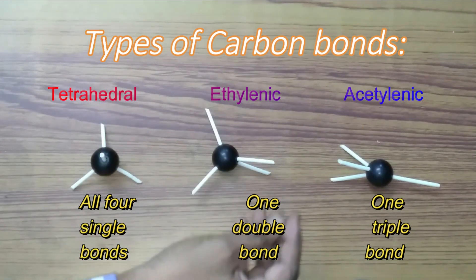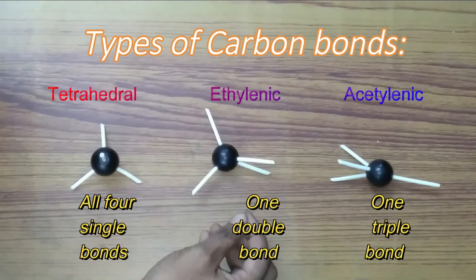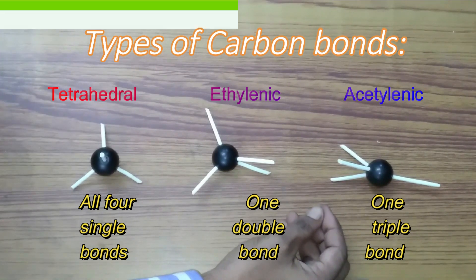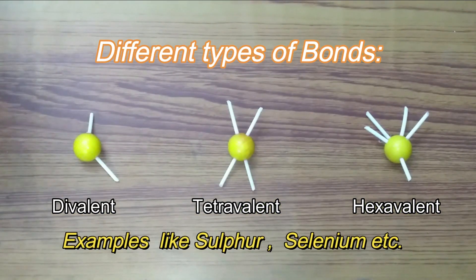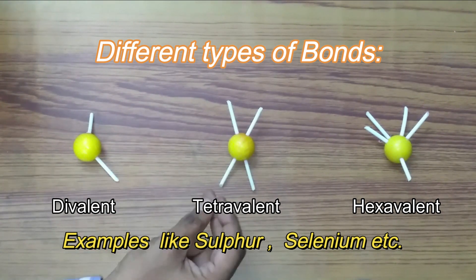This black ball represents tetrahedral ethylinic and acetylinic carbon. Different bonds as divalent, tetravalent and hexavalent.